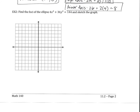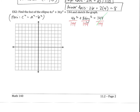Example 2: Find the foci of the ellipse for x² + 36y² = 144 and sketch the graph. First, this is not in a form I recognize — I need it equal to 1 for an ellipse. So divide both sides by 144 to get x²/36 + y²/4 = 1. Now this is the form I recognize. The 36 is the larger value and it's under x, which means the ellipse will be larger along the horizontal.